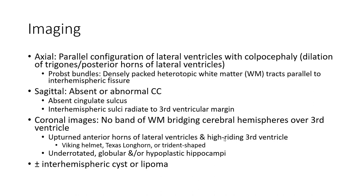Inter-hemispheric sulci radiate to the third ventricle, particularly seen in coronal images with no band of fornix. Widely separated cerebral hemispheres over the third ventricle. Upturned anterior horn of the lateral ventricle and high-riding third ventricle. Widely separated lateral ventricles with trident shape. Under-rotated globular appearance of hypoplastic hippocampus. Plus or minus inter-hemispheric cysts or lipoma.